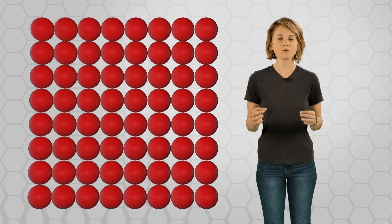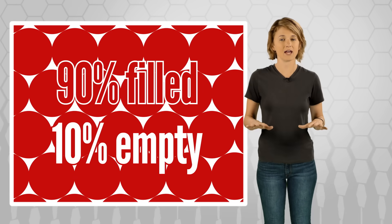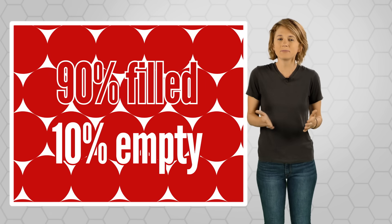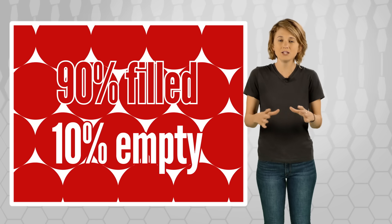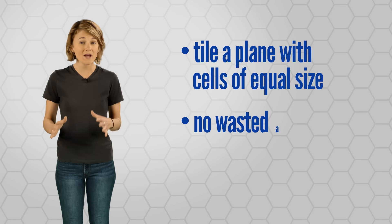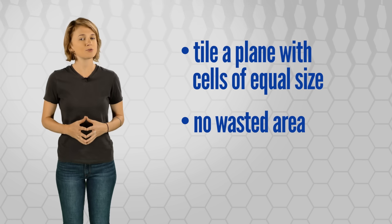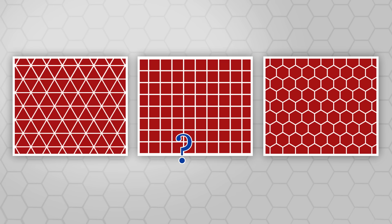Now let's see what happens when we start to pack bubbles together. A sphere is a three-dimensional shape, but when we pack bubbles in a single layer, we really only have to look at the cross section — a circle. Rigid circles of equal diameter can cover at most 90% of the area on a plane, but luckily bubbles aren't rigid. If we want to tile a plane with cells of equal size and no wasted area, we only have three regular polygons to choose from: triangles, squares, or hexagons. So which is the best?